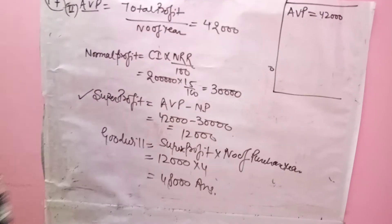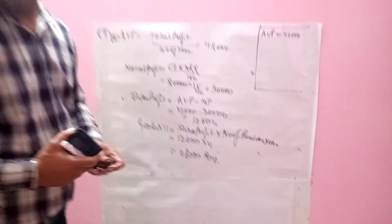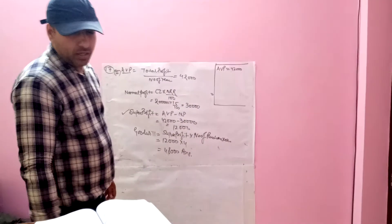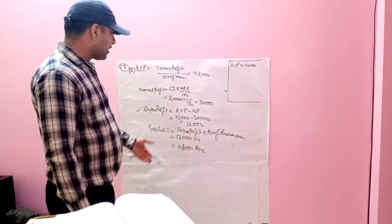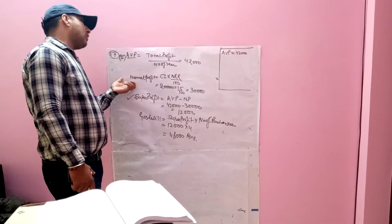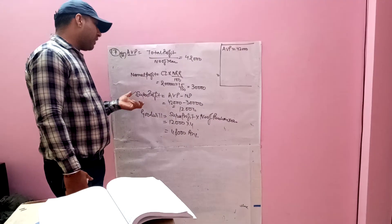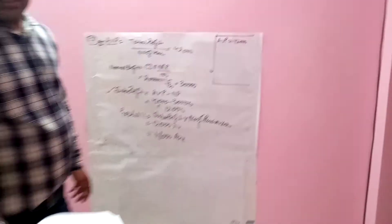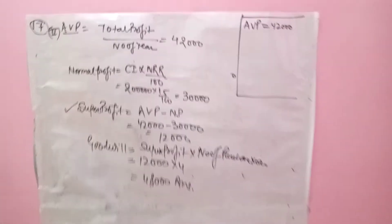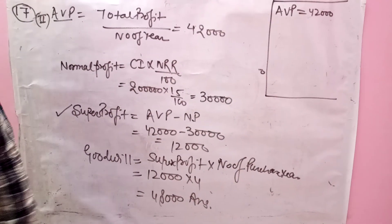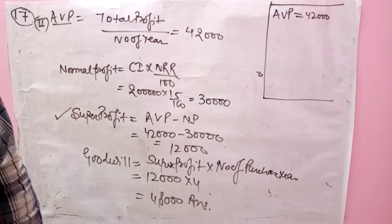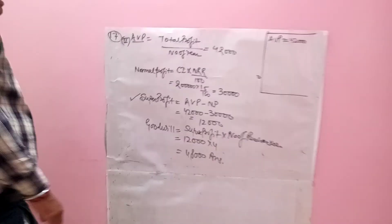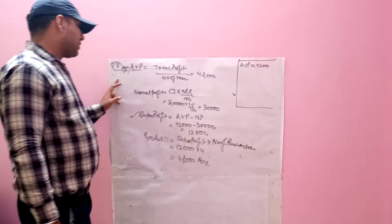So the second point is four years purchase of super profit: first calculate ABP, then normal profit, then super profit, then goodwill. The last and very important point is capitalization of super profit, which I will discuss next — that is the third part of question 17.